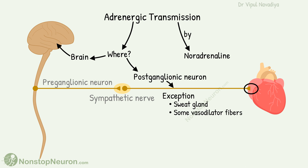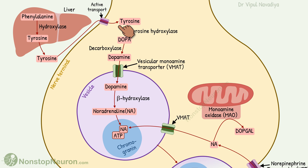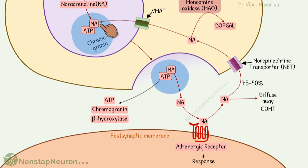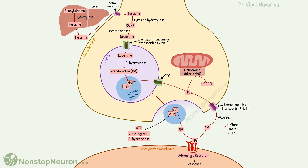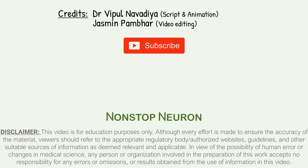In summary, adrenergic transmission is mainly seen in sympathetic postganglionic neurons. It involves uptake of tyrosine, synthesis of DOPA, its conversion into dopamine, uptake of dopamine into vesicles by VMAT, synthesis of noradrenaline by dopamine beta-hydroxylase, and storage with ATP and chromogranin. Nerve impulse-coupled release activates the post-synaptic cell. Termination occurs through reuptake by NET, uptake into vesicles by VMAT, and diffusion away from the receptor site with degradation by COMT. Notes and animation videos are available on the website.